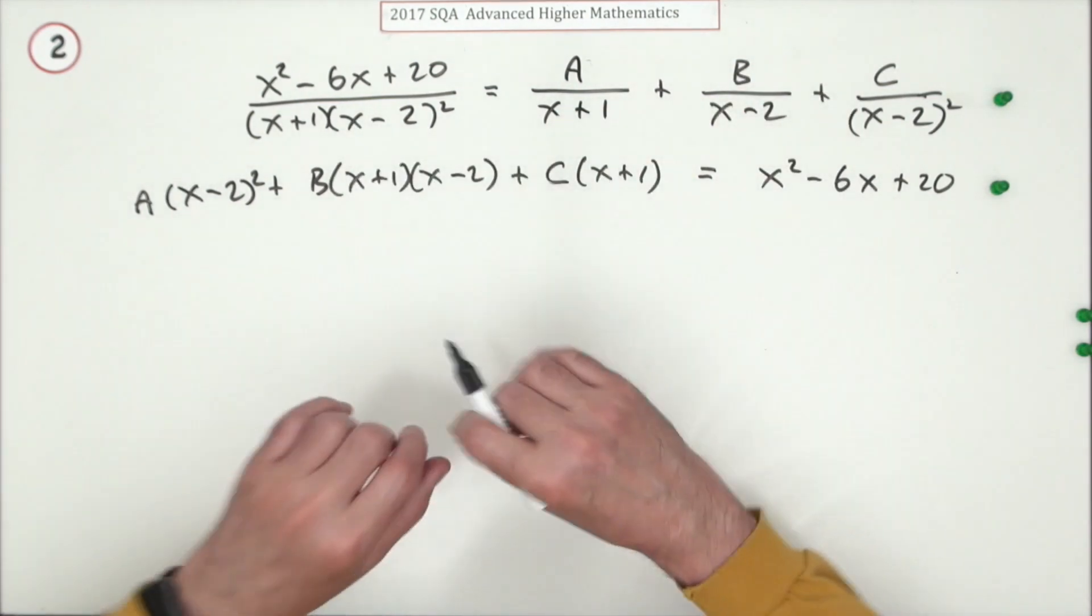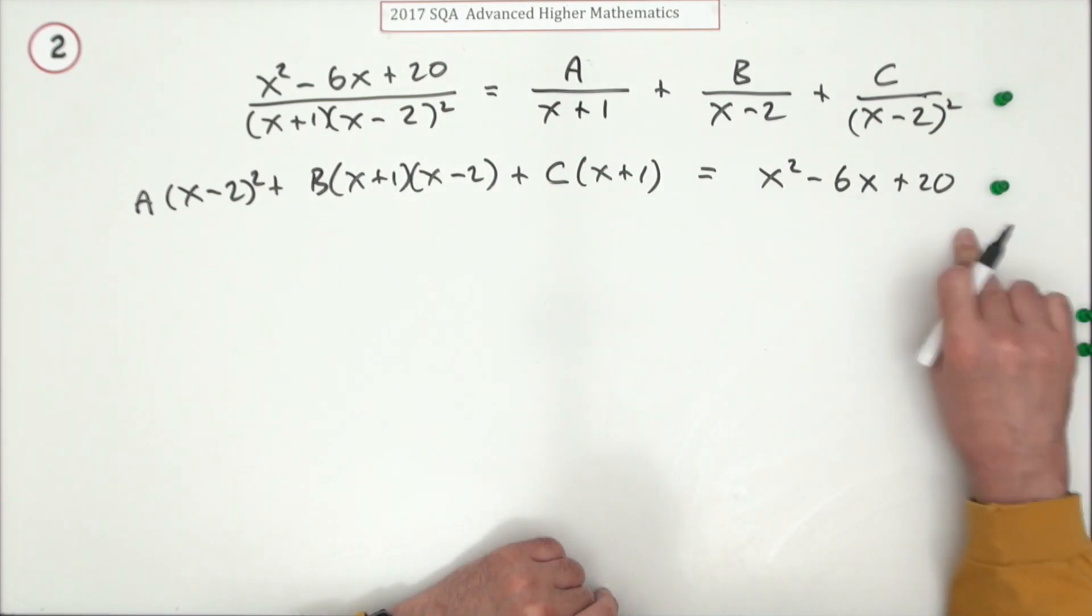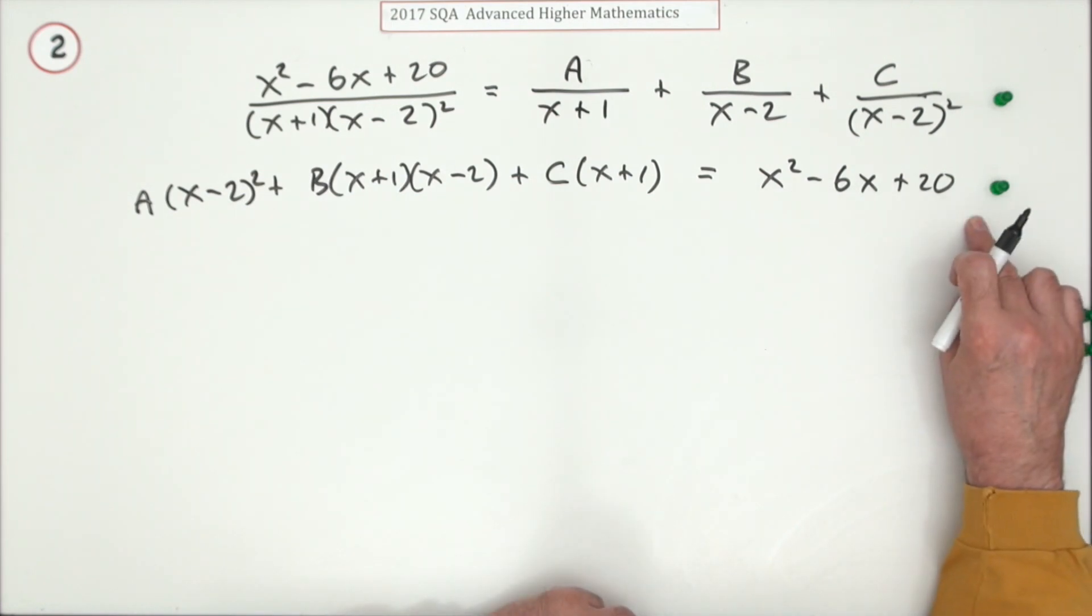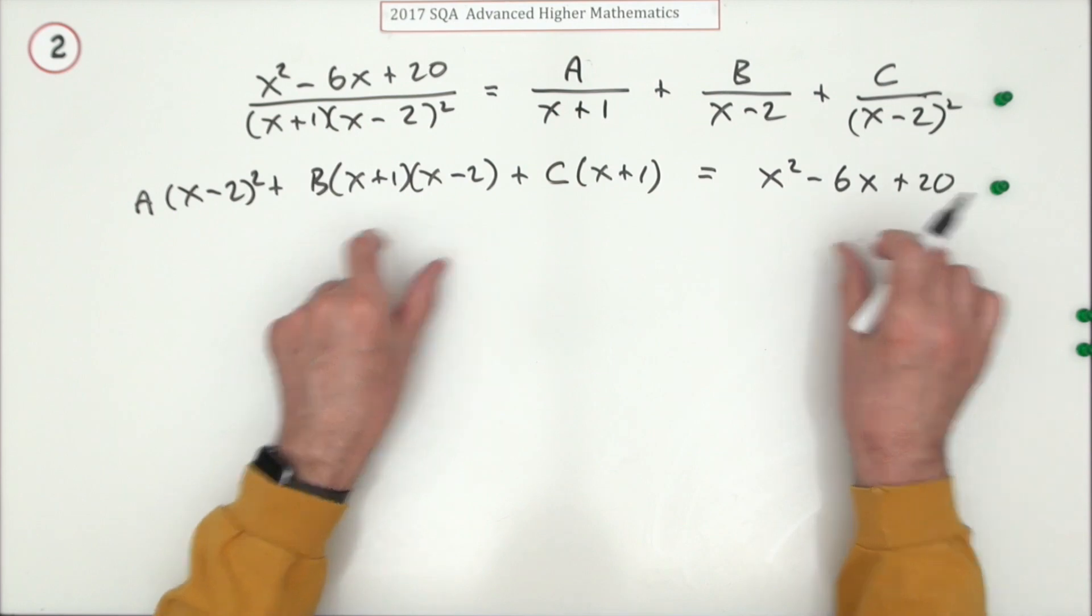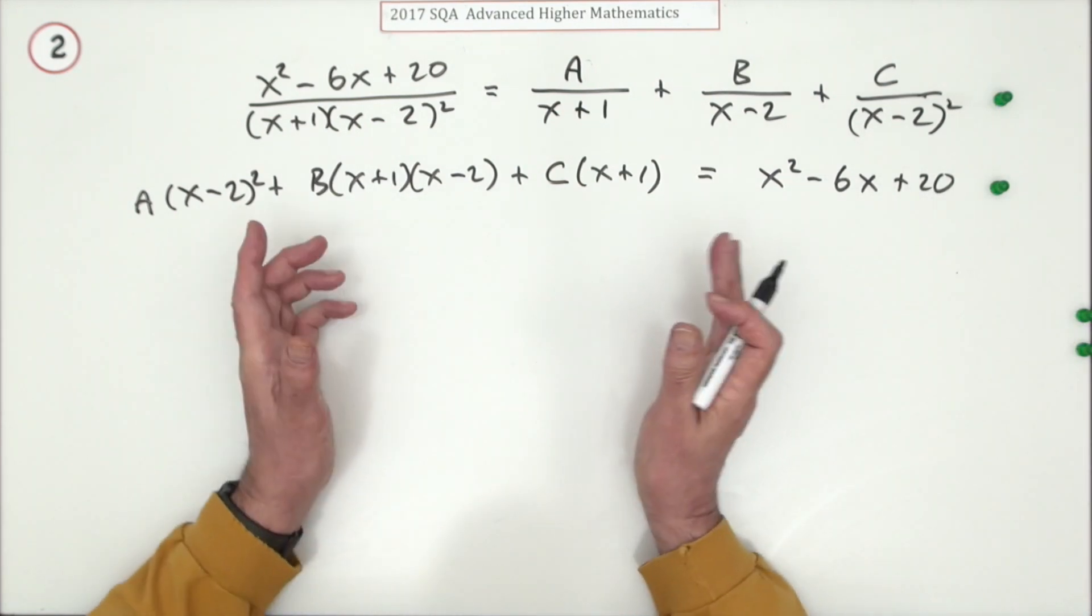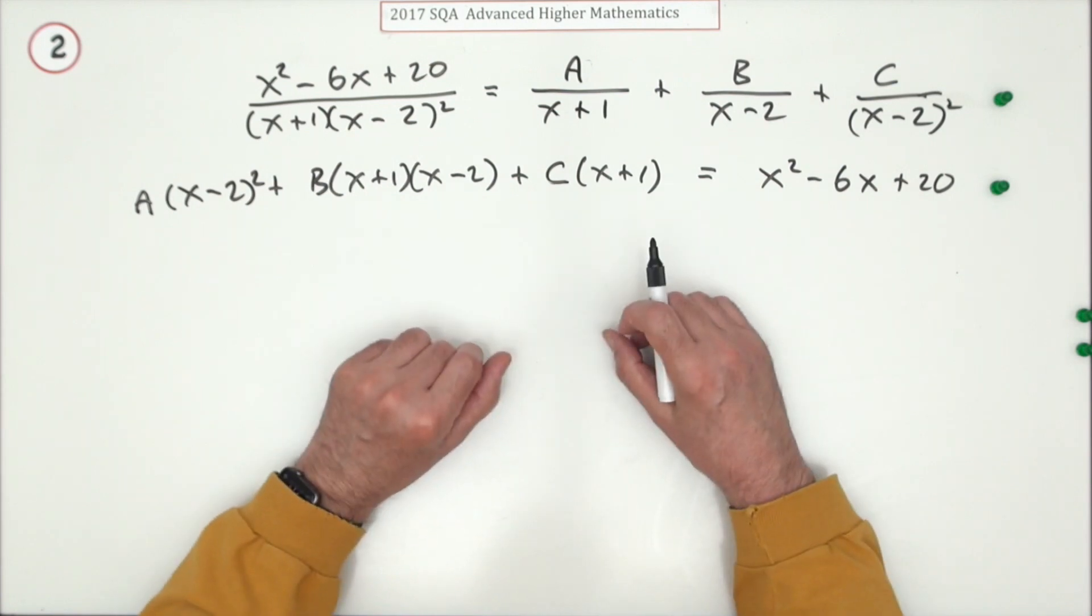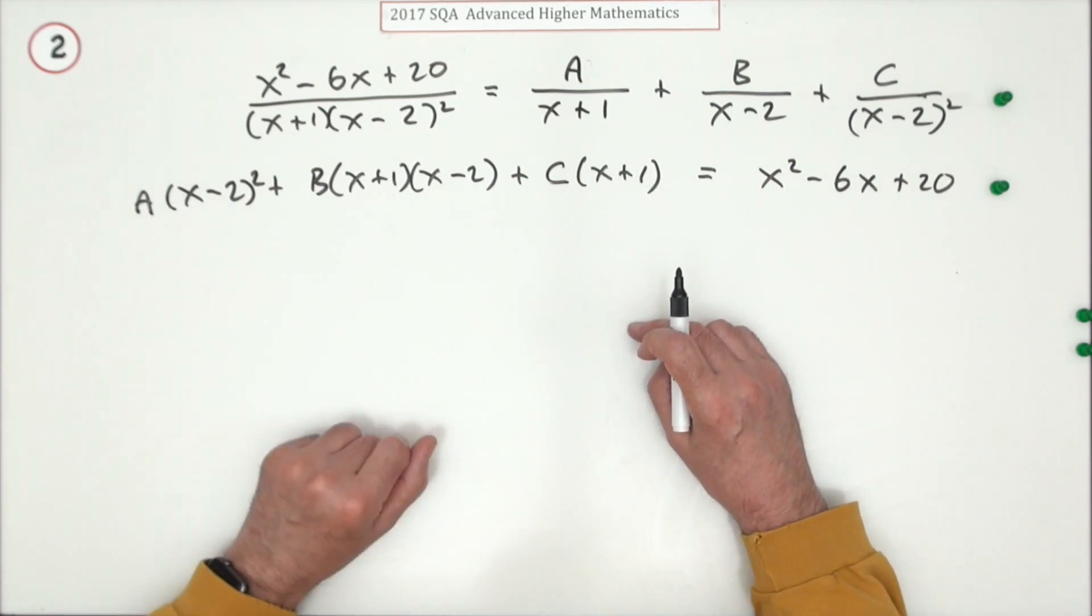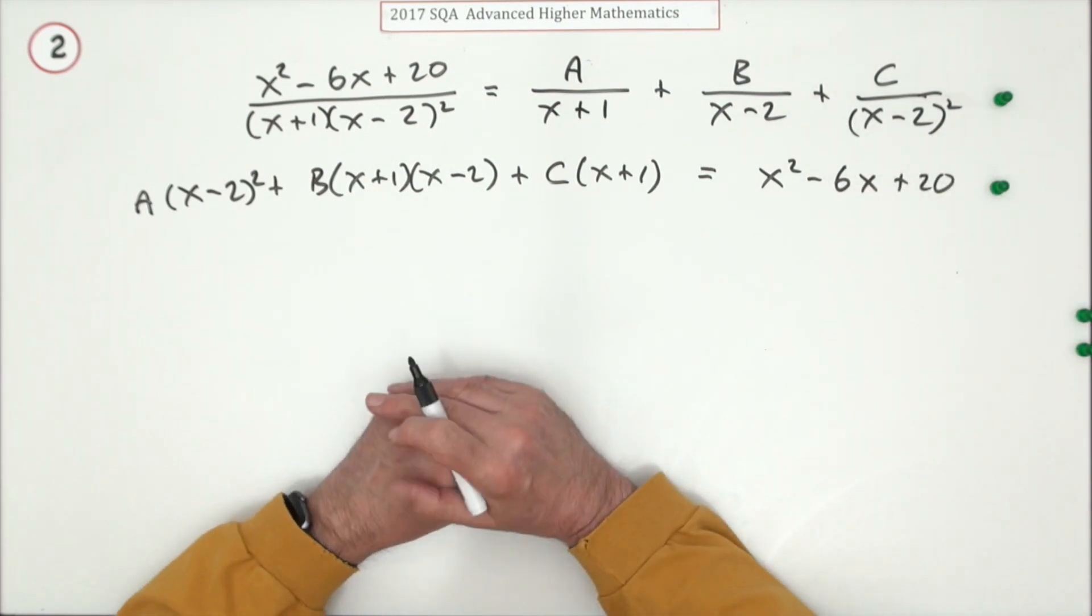The rigorous way to do this is if this is meant to be the same as that, then reducing this to the same form means you can equate corresponding terms - x squared, x, constant. However, if that's an identity, it also means it's true for all values of x, so any number you put into this side should give the same result.